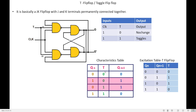Let us see how it works in terms of the characteristic table. The characteristic table is used to obtain the next state Q(n+1) with the help of the present state Q(n) and the input. Q(n) is the present state and Q(n+1) is the next state.